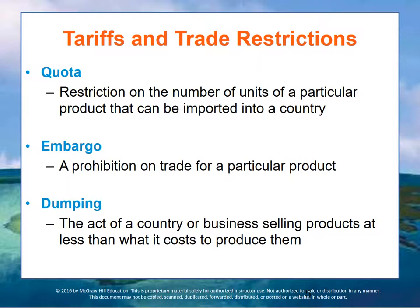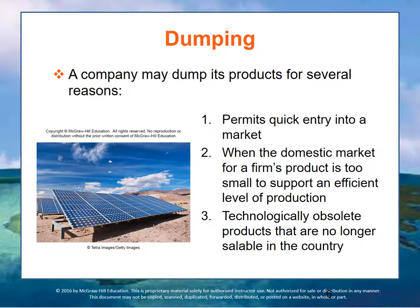One common reason for setting quotas or tariffs is to prohibit dumping. Dumping is a technique that occurs when a country or business sells products for less than what it costs to produce them, in an effort to either take or maintain market share. Dumping permits a quick entry into a market by offering extremely low prices. Sometimes dumping occurs when a domestic market for a firm's product is too small to support an efficient level of production, so products are dumped into foreign markets to continue production at a higher level. In other cases, technologically obsolete products that are no longer saleable in the country of origin are dumped overseas.